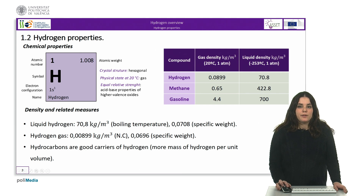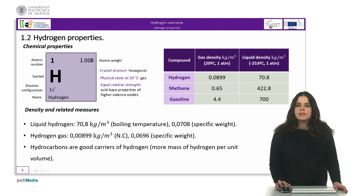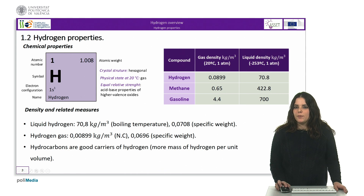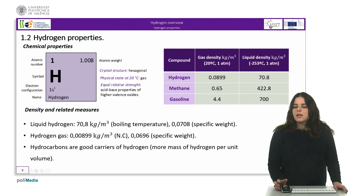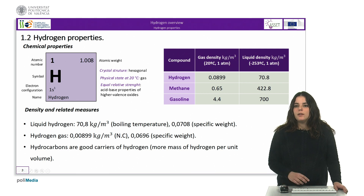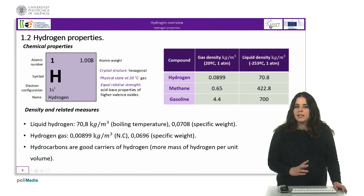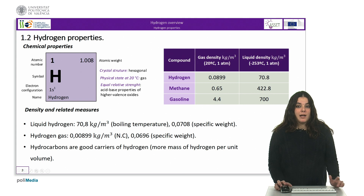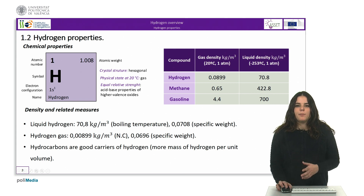Hydrogen is the simplest element and it occupies the first position in the periodic table. A hydrogen atom consists of a proton in its nucleus and an electron that moves in an orbit around it. Hydrogen has an atomic number of 1, an oxidation state of plus 1, and an atomic weight of 1.008 atomic units, higher than 1 by the coexistence of several isotopes. From the chemical point of view, the arrangement of a single electron orbiting around a nucleus makes the element very reactive, which is why hydrogen atoms combine in pairs to form hydrogen molecules.